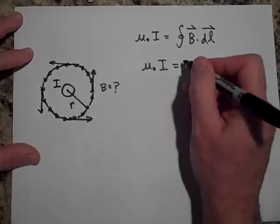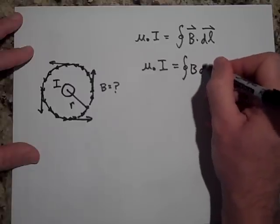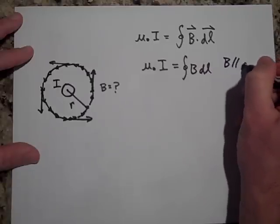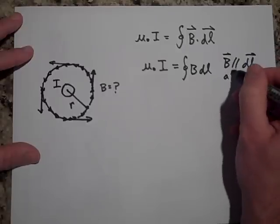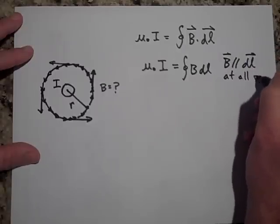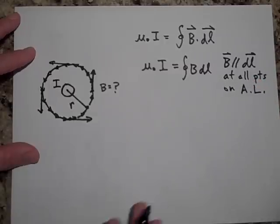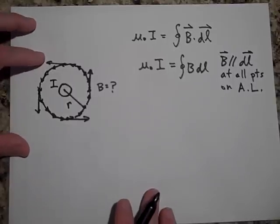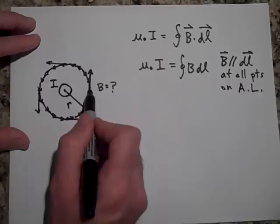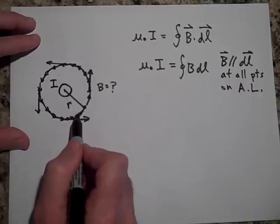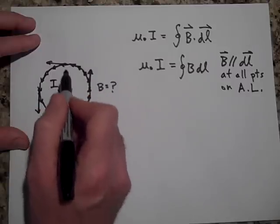And so I'm going to get rid of the dot product because B is parallel to dl at all points on the Amperian loop. And then, since I'm going to make the argument that since you're at the same location, at each one of these points, the same distance r away from the wire...